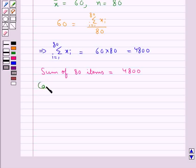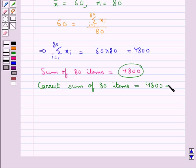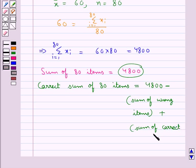Now we will find the correct sum of 80 items. This would be given by: (sum of 80 items calculated) minus (sum of wrong items) plus (sum of correct items), which is 4800 minus the sum of wrong items plus the sum of correct items.